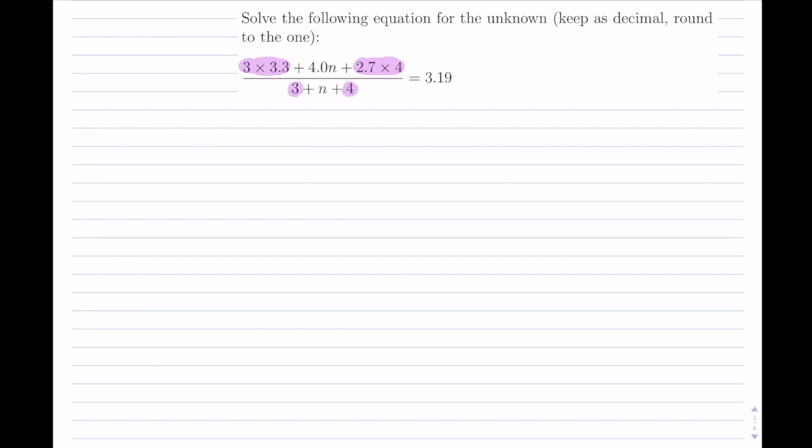So let me simplify this first. So 3 times 3.3, so I'm going to get 9.9 plus 4 times n. So nothing to do there. And then 2.7 times 4, so that's going to be 10.8. That's what we have there. Now in the denominator, this 3 that you have and this 4, because it's addition, you can just simply go ahead and add them. One's going to give us 7 plus n. On the right-hand side, we have 3.19.